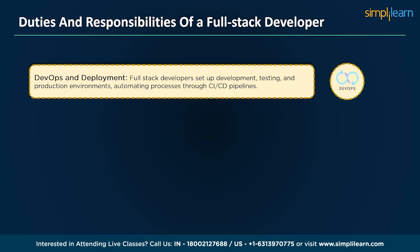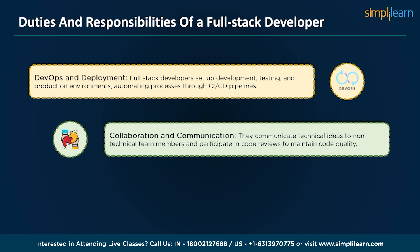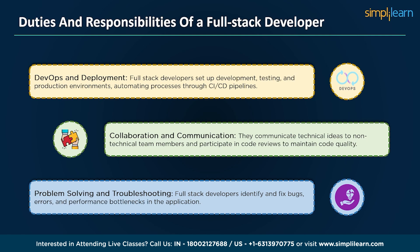Full stack developers also set up development, testing, and production environments, automating processes through CI/CD pipelines. They monitor application performance, troubleshoot issues, and ensure smooth deployment. Collaboration and communication: they work in teams collaborating with designers, developers, and stakeholders, communicating technical ideas to non-technical members and participating in code reviews. Problem solving and troubleshooting: they identify and fix bugs, errors, and performance bottlenecks, analyzing user feedback to make improvements and keep the app running smoothly.